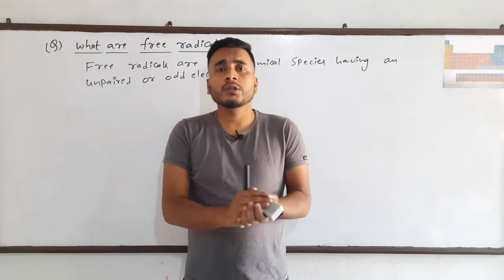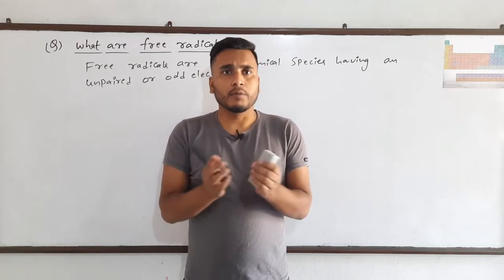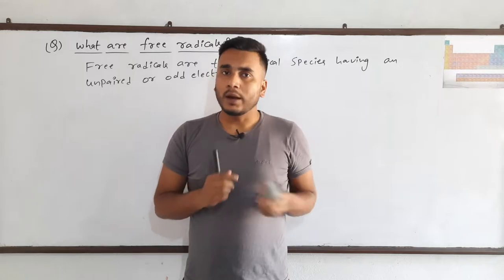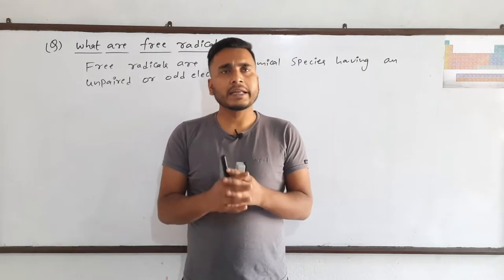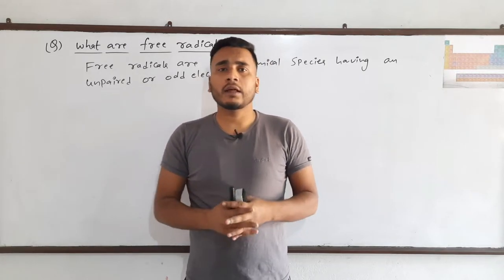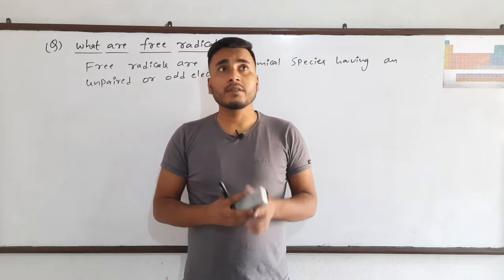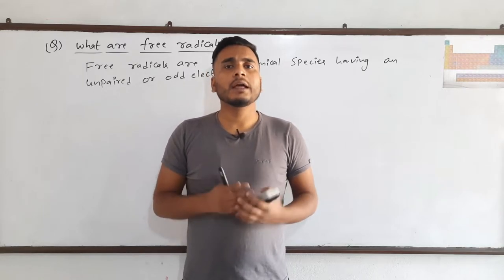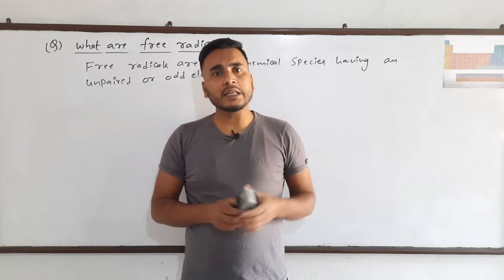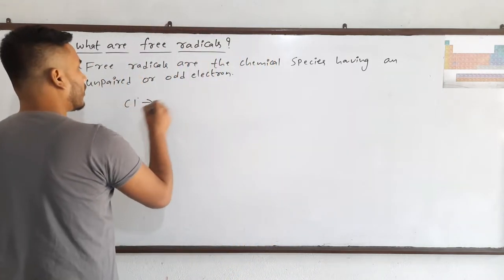Free radicals are formed due to the homolytic fission of the bond. Homolytic simply means if there is a molecule and the bond between them is broken, then one electron will be taken by one atom or group of atoms and another electron will be taken by another atom or group of atoms. There are two types: carbon-based free radicals where the electron is on carbon, and non-carbon free radicals where the electron is not on carbon, like Cl dot.